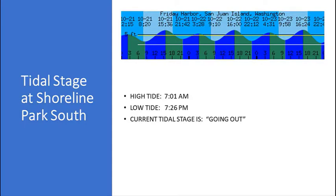The next thing we need on the data sheet is the tidal stage. The high tide was at 7 o'clock this morning, and the low tide is going to be around 7:30 tonight. So currently the tidal stage is going out. We can find out the tidal stage by looking on a tidal chart, and a lot of those are available on the internet.